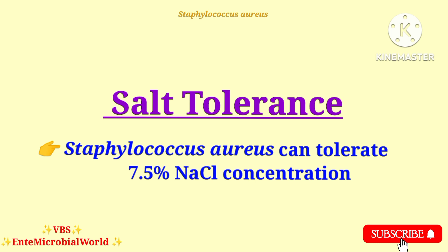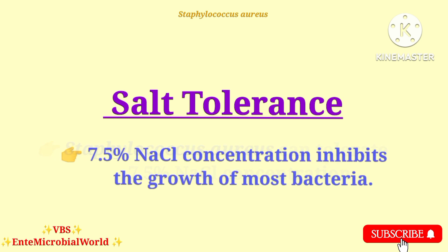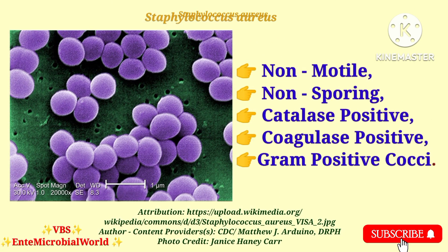Salt tolerance: Staphylococcus aureus can tolerate high salt concentrations — that is, it can tolerate 7.5% sodium chloride concentration. This concentration inhibits the growth of most other bacteria. Up to this point, we have learned the morphology and growth requirements of Staphylococcus aureus.